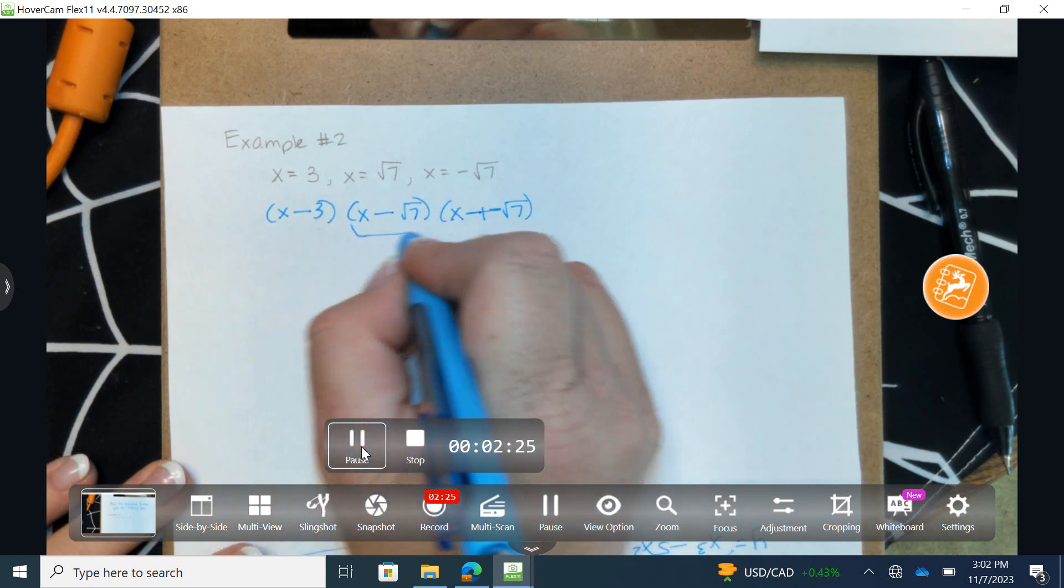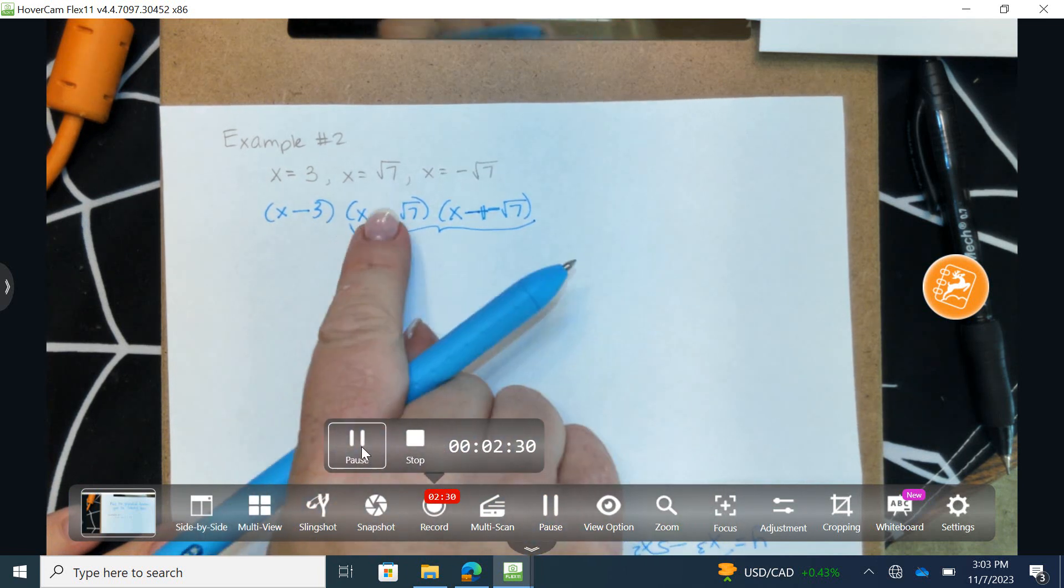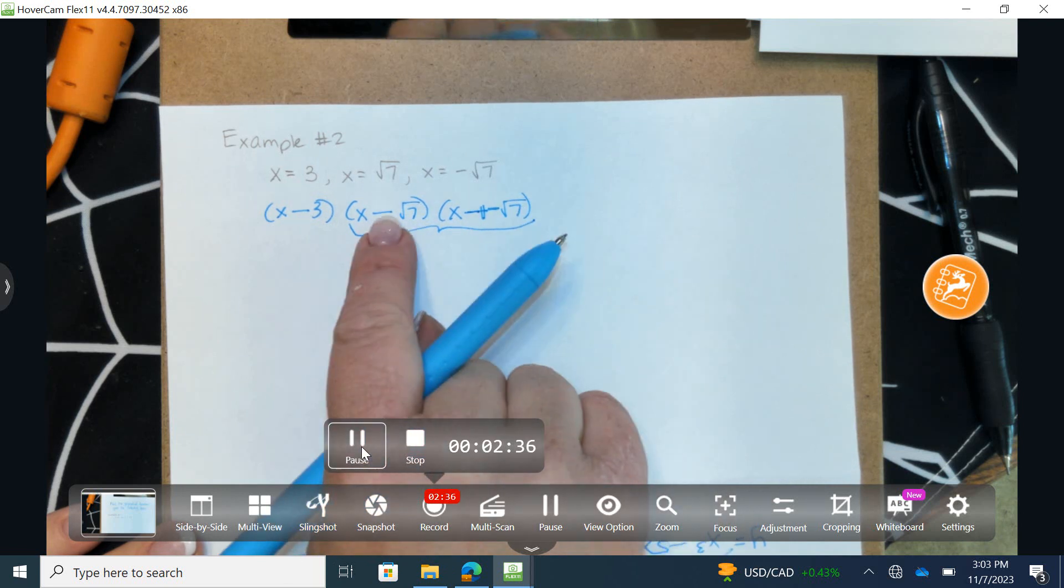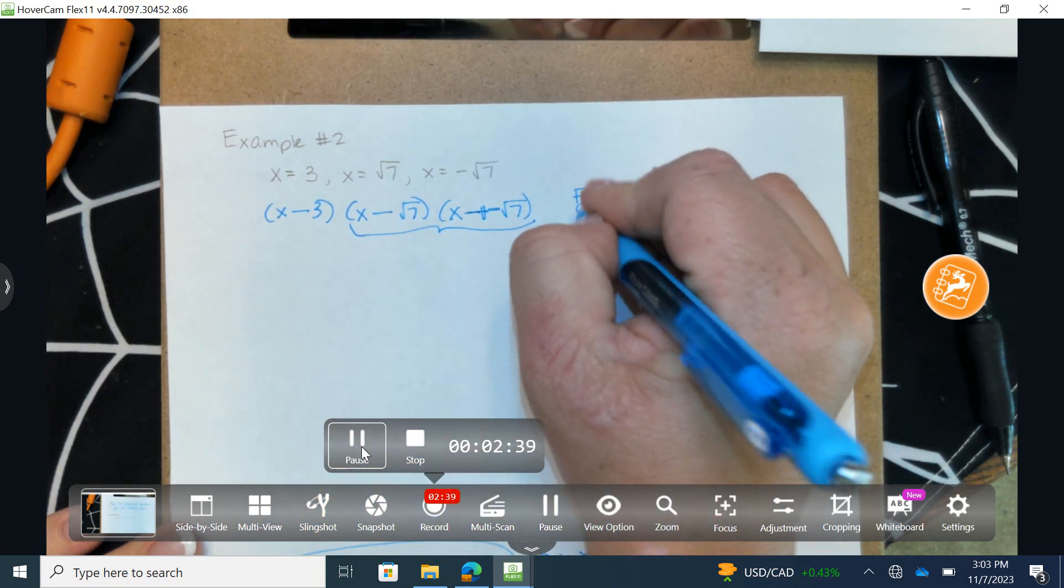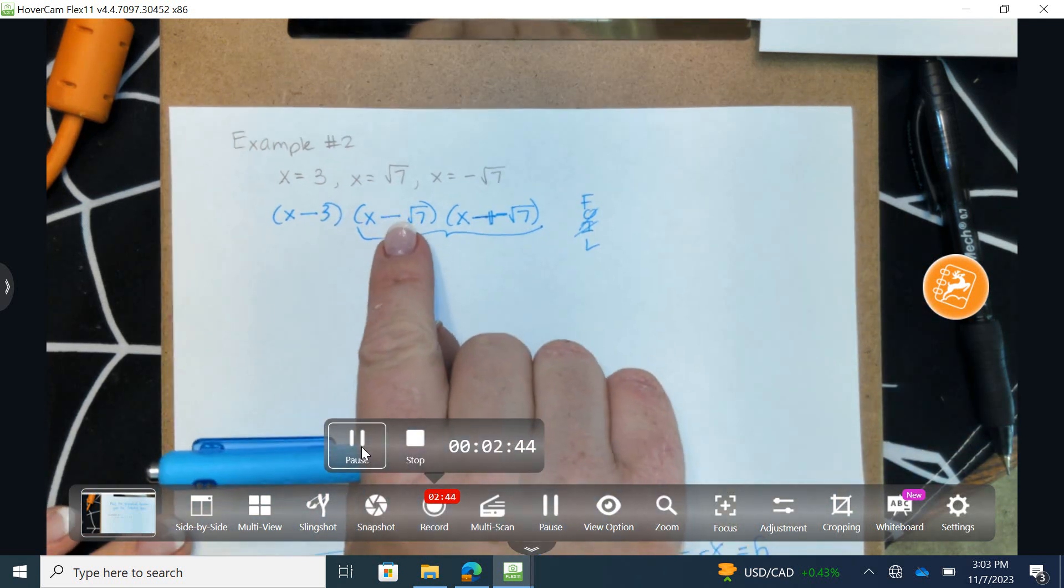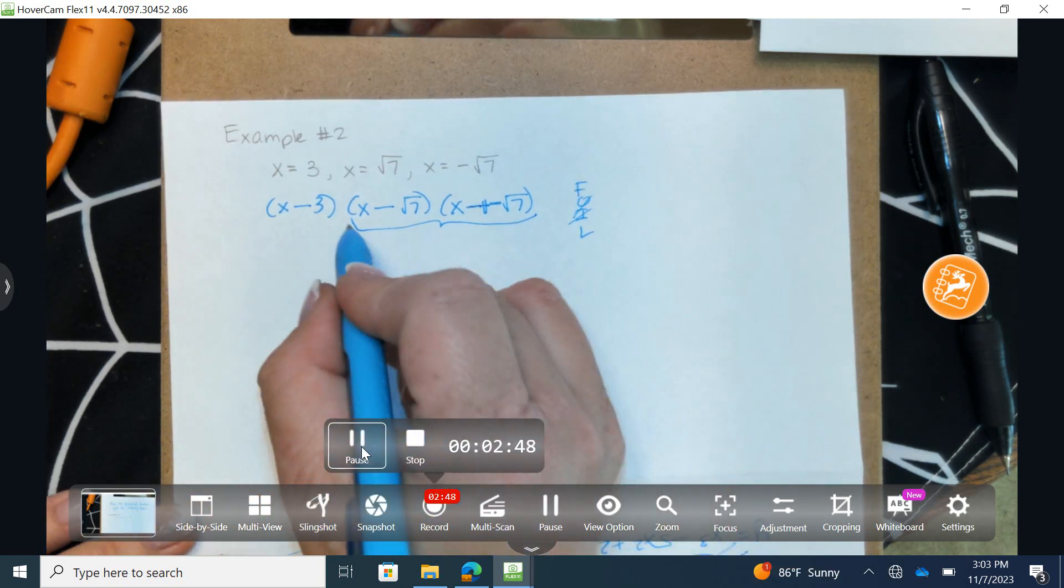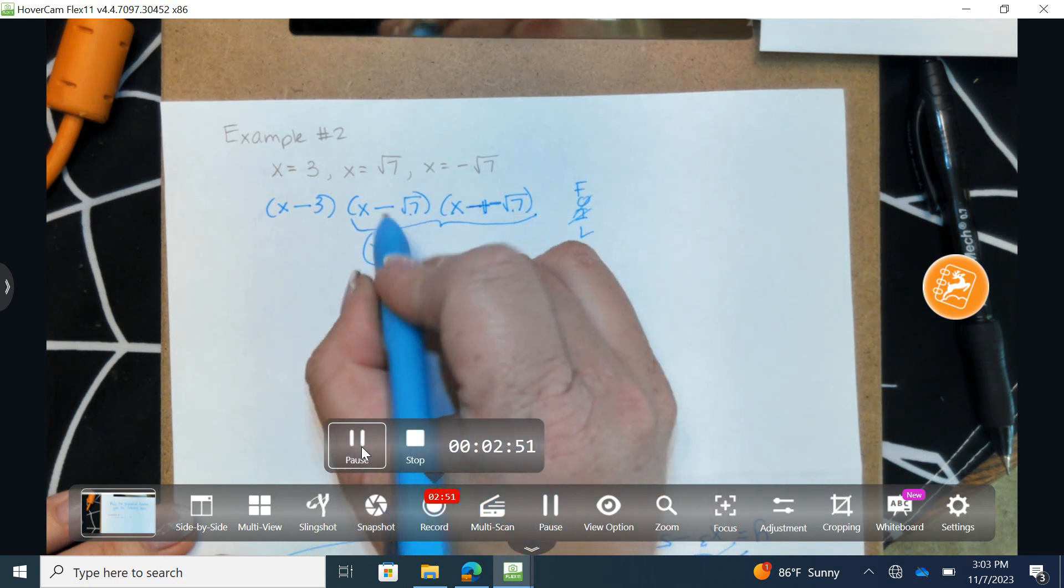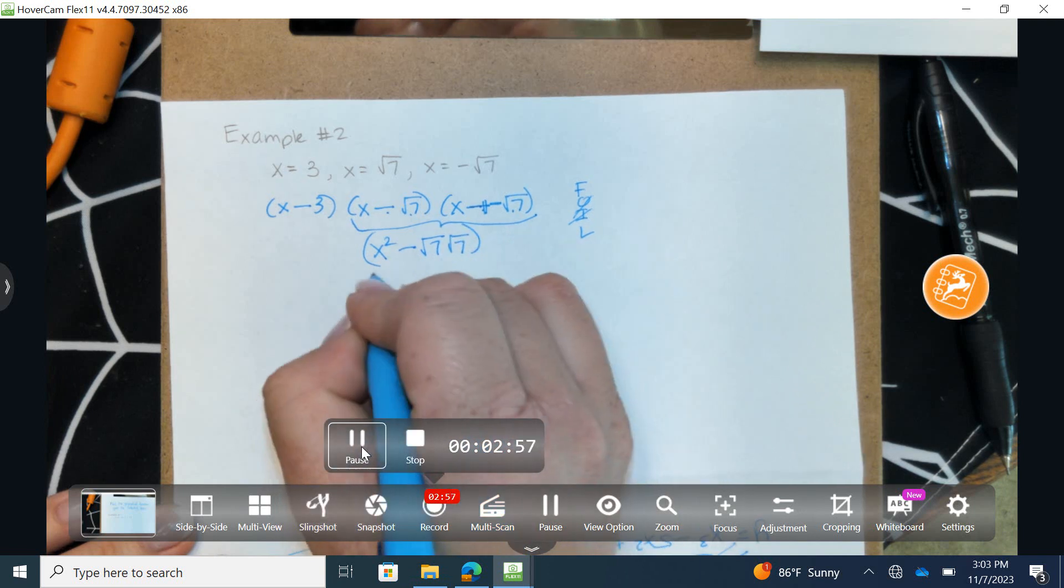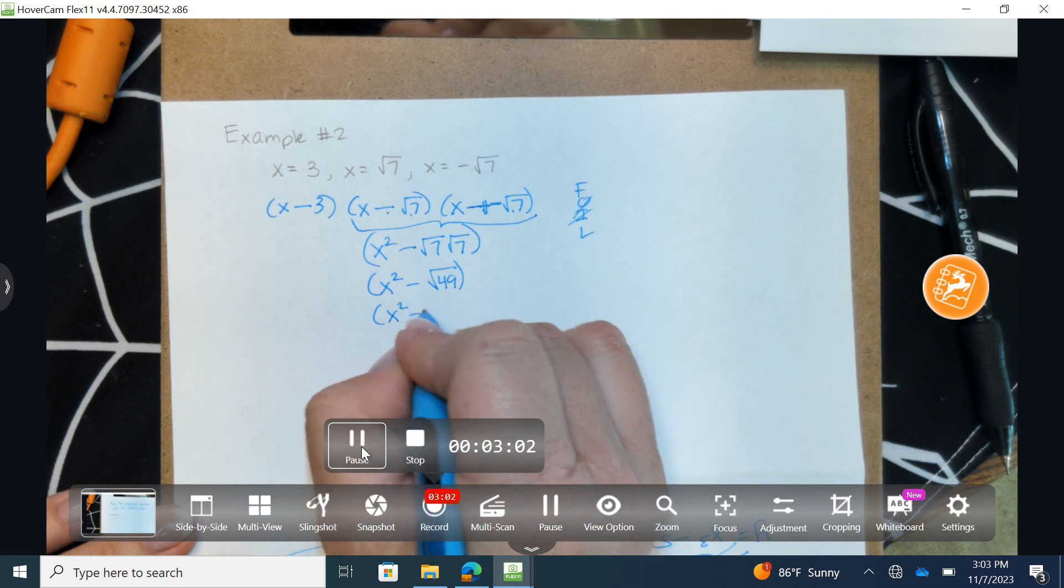Alright, so I'm going to start by first FOILing this. When I have the exact fronts and I have the exact last terms, the only difference is the sign in between, I get to skip the two middle procedures because ultimately they're just going to cancel out. One would be negative square root of 7x and the other is positive square root of 7x. So let's multiply the fronts to get x squared. Let's multiply the backs. A negative times a positive is a negative. And I have the square root of 7 times the square root of 7. Now the square root of 7 times the square root of 7 is the square root of 49. And we know the square root of 49 is simply 7.